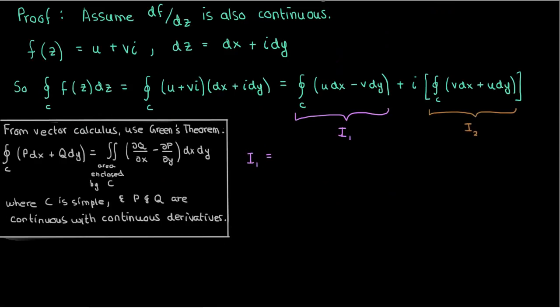Start with the first one. We compare it to the p and q in Green's theorem, then we can see that u here is like p and negative v here is like q. So when we apply Green's theorem, we get the double integral over the area enclosed by c of negative dv/dx minus du/dy.